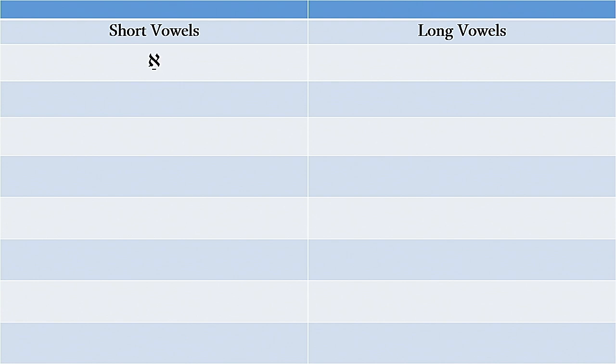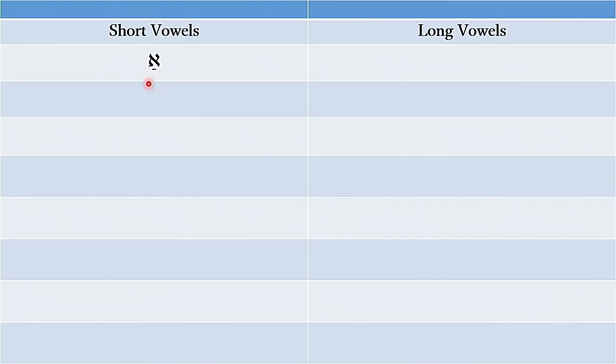We'll begin with the vowel patach. You can see this horizontal line beneath the aleph — I'm using the aleph simply as an indicator where the consonant would go; it can be any consonant. The vowel will go either beneath the consonant, as it does in this case, or on the side of the consonant. For the patach, this small horizontal line goes beneath the consonant, and we pronounce this as the sound 'ah', like pat or cat. We call this vowel patach.